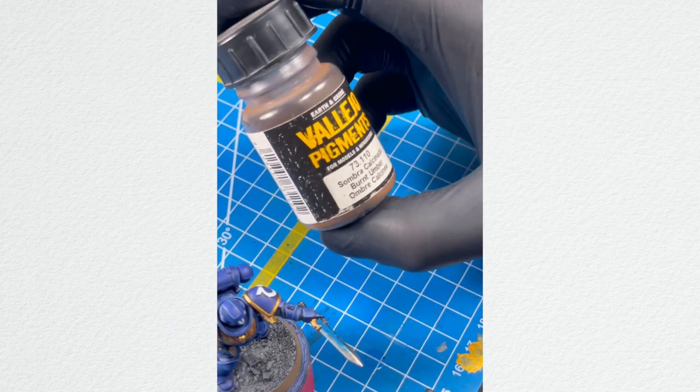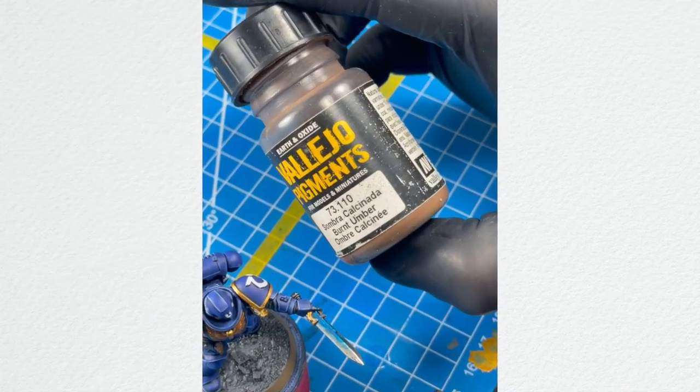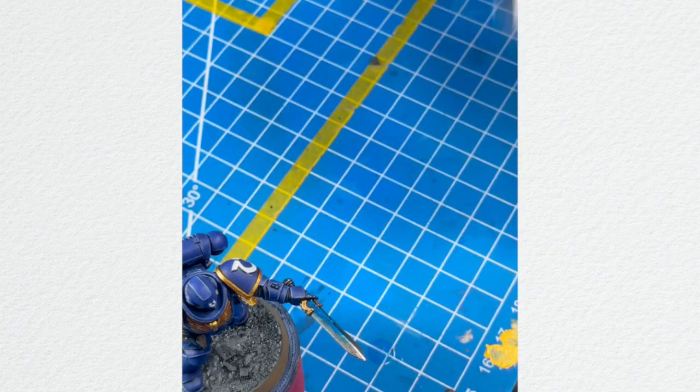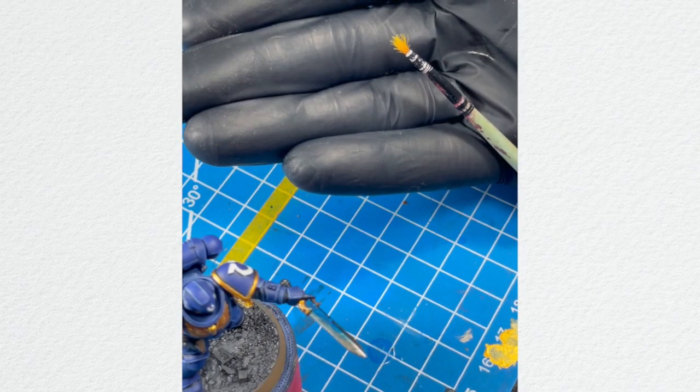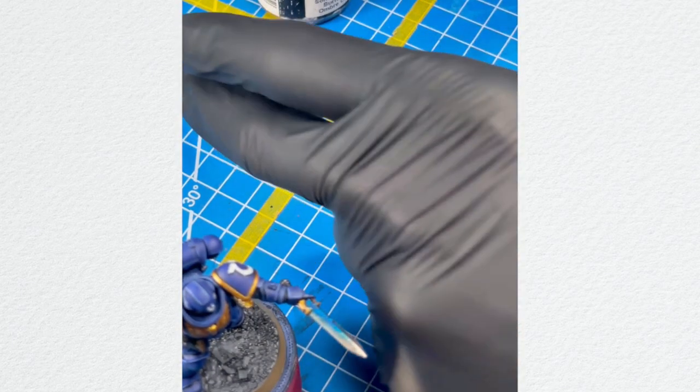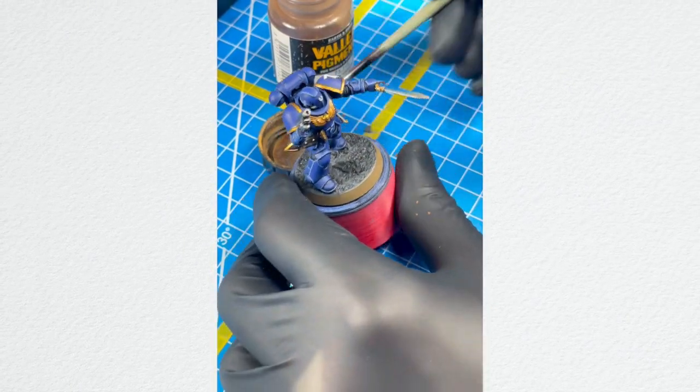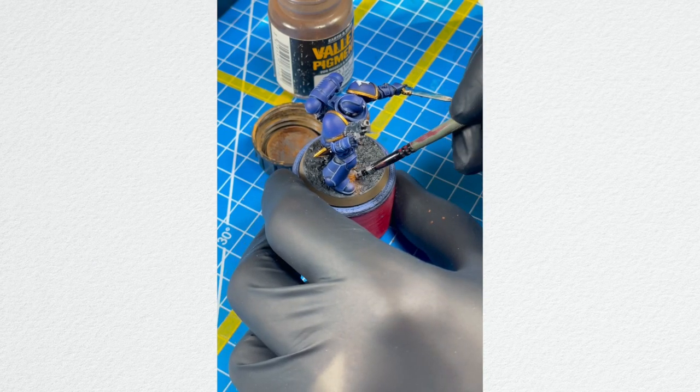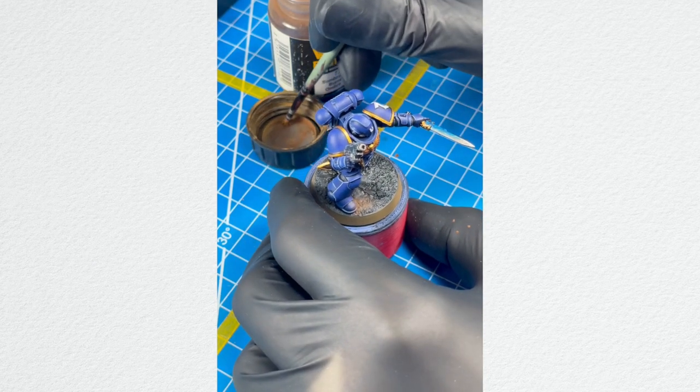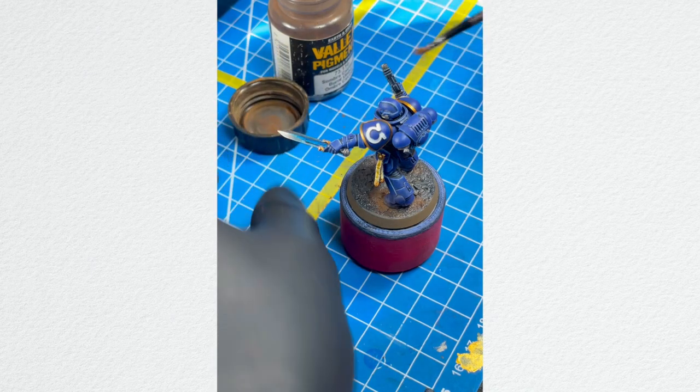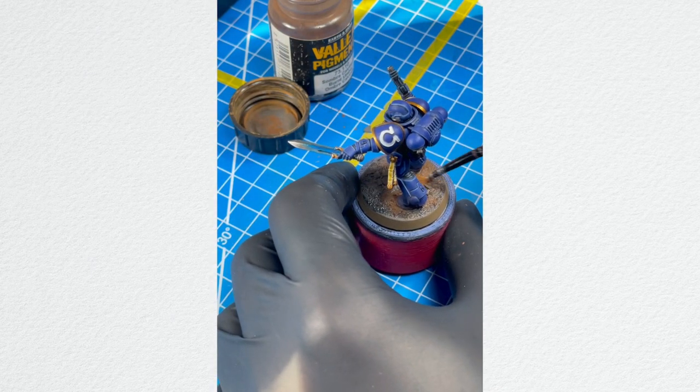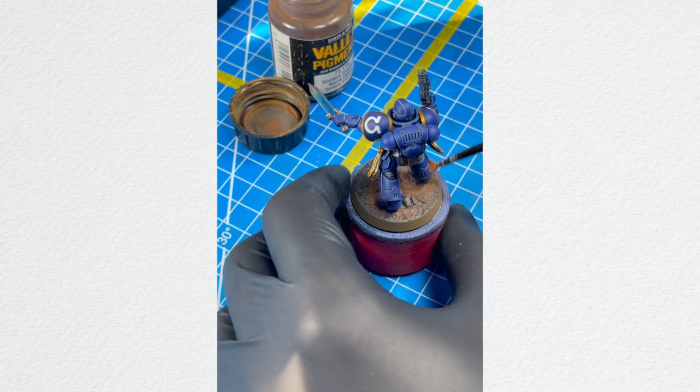Then I put some Astrogranite all over the base and washed it all using the Nuln Oil. When it dries, the last step to tune up the base is to pick up some dry pigment from Vallejo and your old brush, and just stipple the pigment all around the miniature. So you can see I'm doing it not really precisely—I'm trying to be not neat and to put some dirt all around his boots to connect the base with the miniature itself.